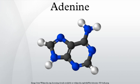Function: Adenine is one of the two purine nucleobases used in forming nucleotides of the nucleic acids. In DNA, adenine binds to thymine via two hydrogen bonds to assist in stabilizing the nucleic acid structures. In RNA, which is used for protein synthesis, adenine binds to uracil.